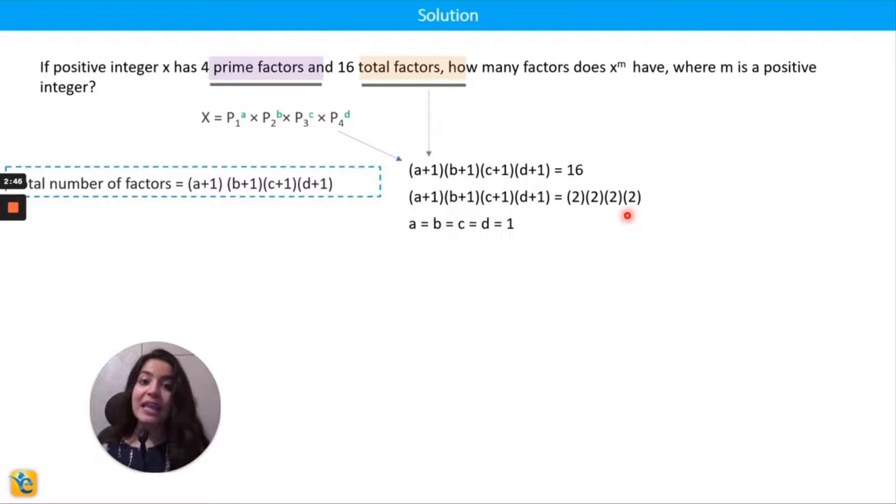With this then I get the values of a, b, c, d as one. So here is the complete prime factorization of x. Of course I still don't know what these prime factors are - I don't know the values of p1, p2, p3, p4 - but this is what it is going to look like.